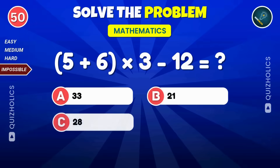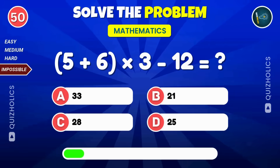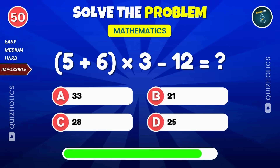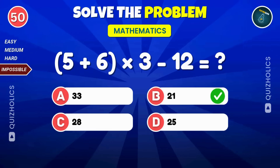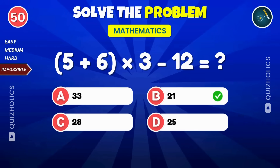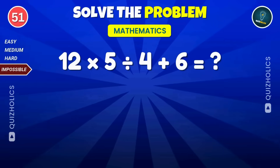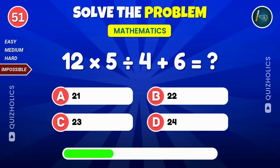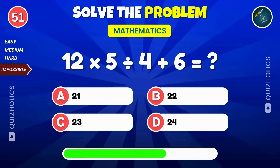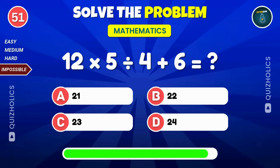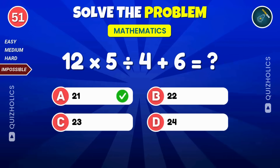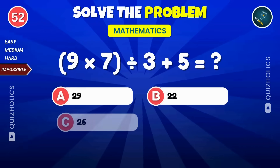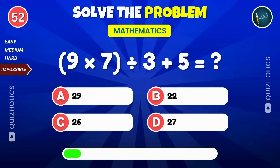Try this equation: 5 plus 6 times 3, then subtract 12. Don't forget to subscribe and hit the bell icon for more exciting quizzes like this! Impossible level: 12 times 5 divided by 4, then add 6.